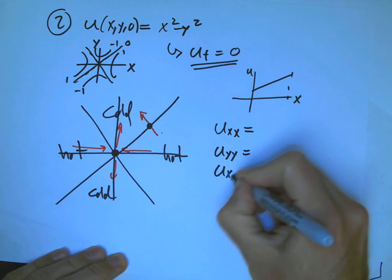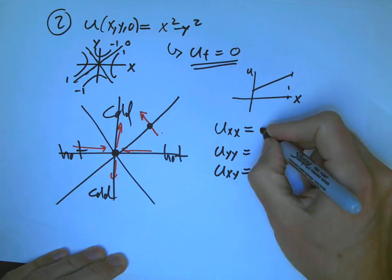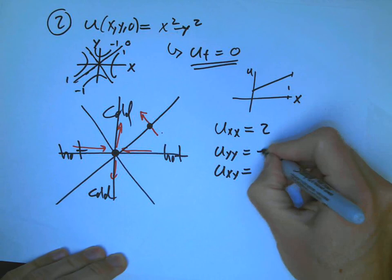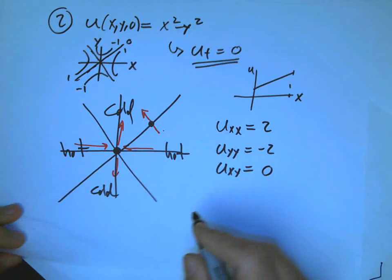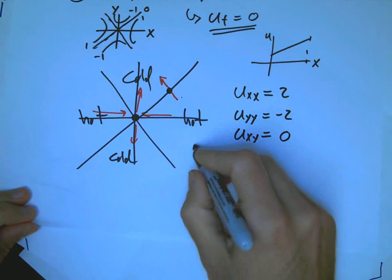Now, let's analyze, let's remember what our three partials were here. They were equal to plus 2, minus 2, and 0. Interesting.